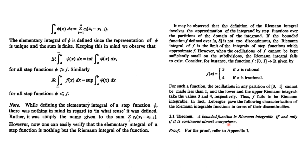Almost everywhere means that at the points where the function is not continuous, the measure is zero. If the measure is zero, the value of the integral over that set is zero. For example, a function that is discontinuous at infinitely many points is not continuous almost everywhere — its upper integral and lower Riemann integral are not equal, so it is not Riemann integrable. In further lectures, we will see that this function is Lebesgue integrable.